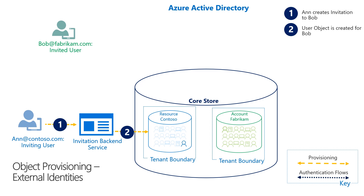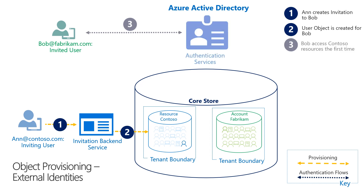A key thing to note is that the moment Bob's user object is created in the resource tenant, it can be added to groups, you can change attributes, et cetera. In step three, Bob needs to complete the provisioning process, and we're transitioning to the redemption phase of the invitation process. In our Teams example, Bob will get an email with a link to access Teams.